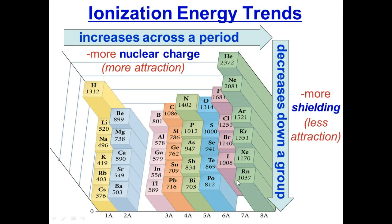As we go down a group, ionization energy decreases because there's more shielding. More rings make it harder for the protons' force to affect the outer electrons. Think of it like trying to watch one person versus watching 50 people — with more layers it's harder for the nucleus to hold back everyone.